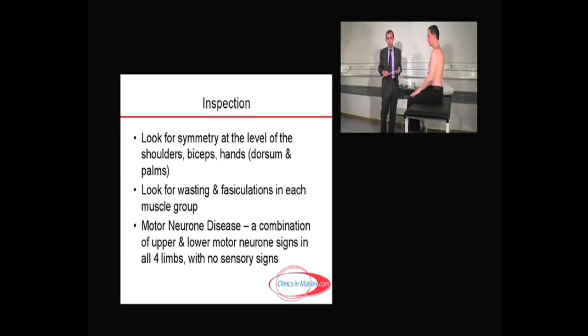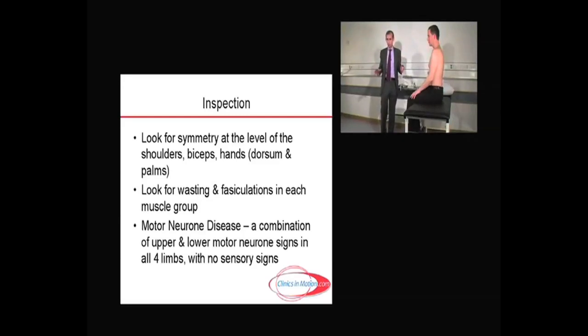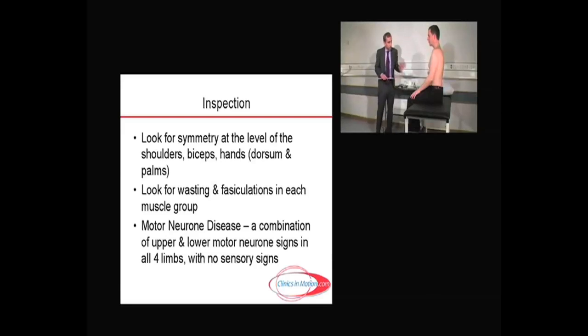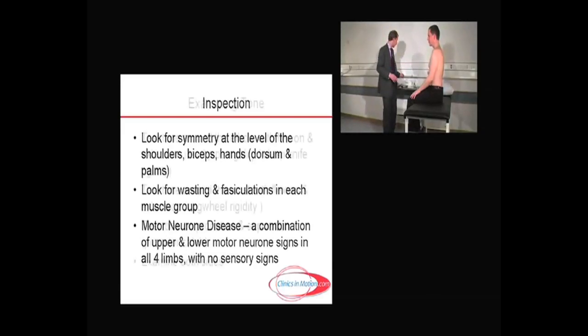This reminds me to look at all muscle groups, particularly in conditions such as motor neuron disease — which is a combination of upper and lower motor neuron signs in all four limbs with no sensory signs. Once I've done the observation and found no wasting or fasciculations, I move on to tone.